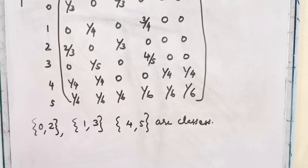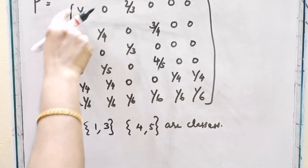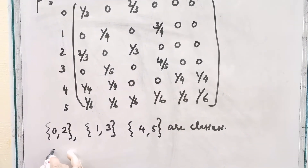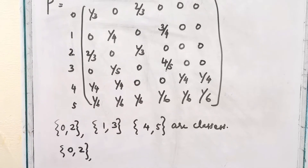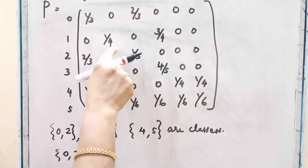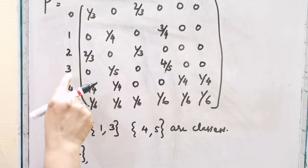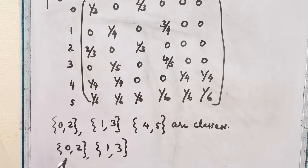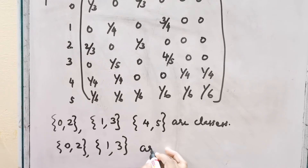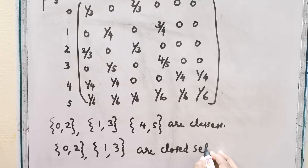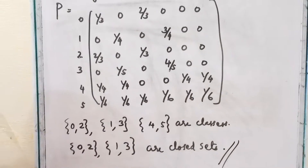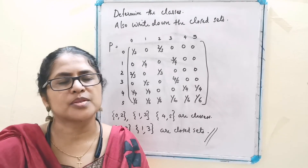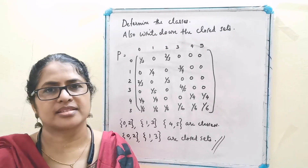Now, what are the closed sets? States 0 and 2 communicate with each other only — 2→0 and 2→2 are possible — so {0, 2} is a closed set. States 1 and 3 communicate with each other only — 1→3 and 3→1 are possible — so {1, 3} is also a closed set. Therefore, {0, 2} and {1, 3} are the closed sets. I think you could understand the concepts of irreducible Markov chain, reducible Markov chain, and closed sets. Thank you.